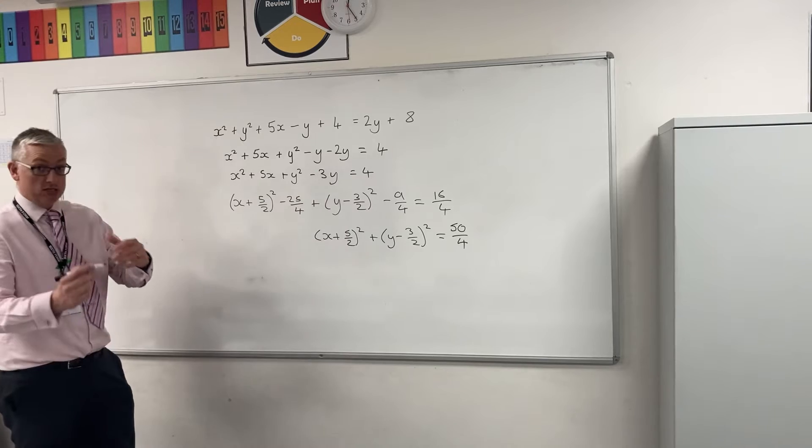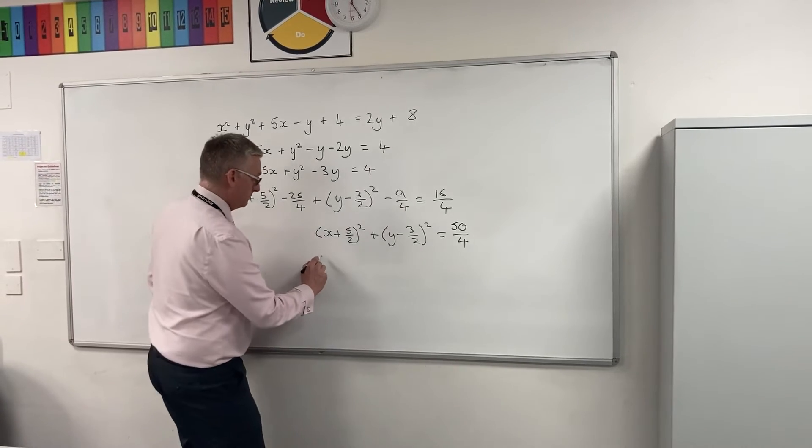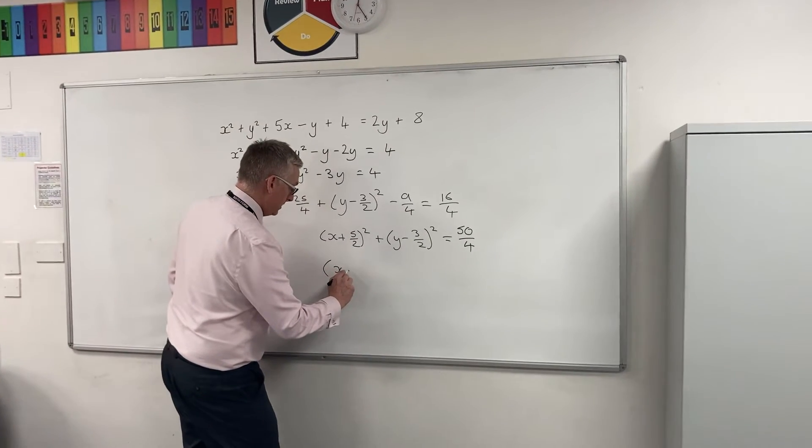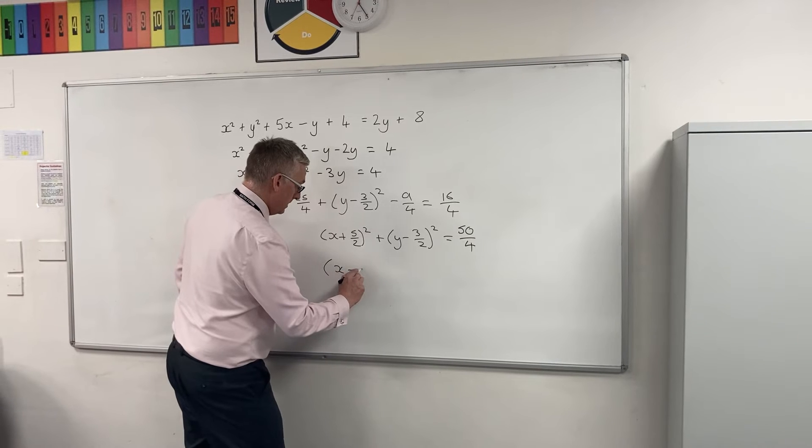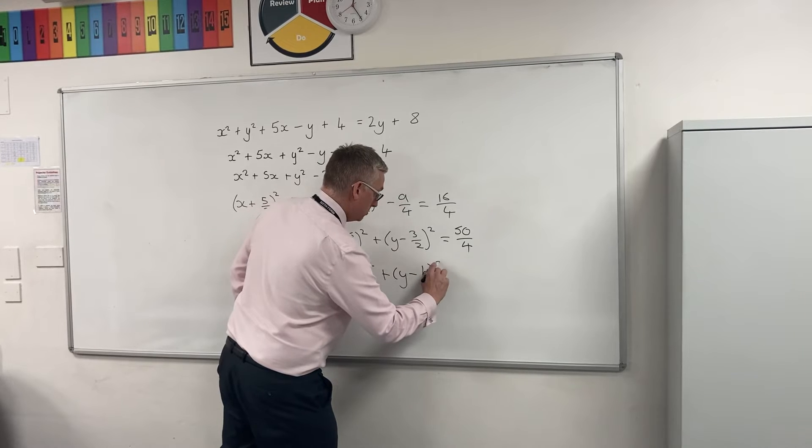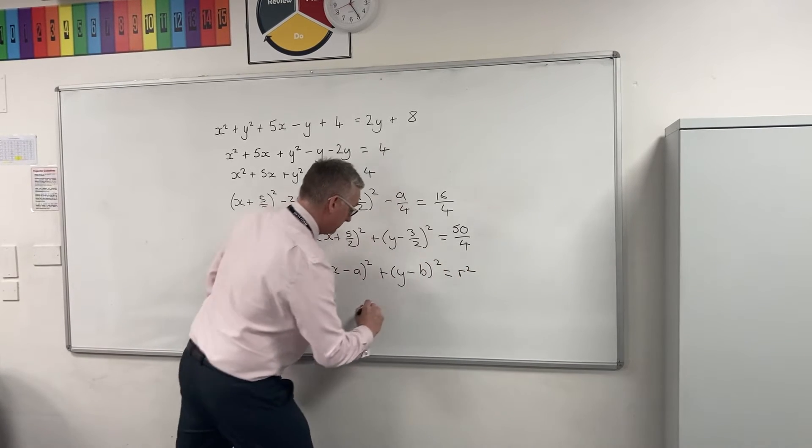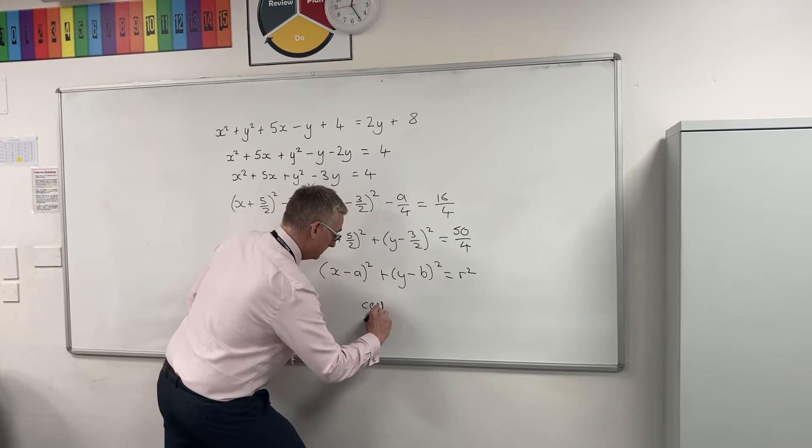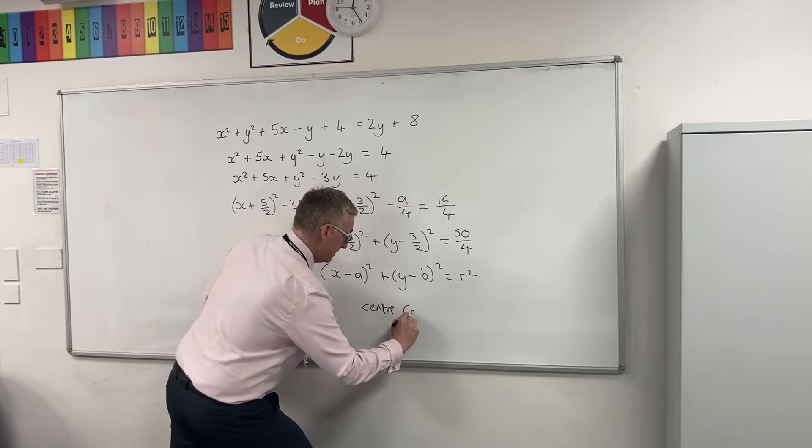Let's compare that to the standard equation of a circle, which is x minus a squared plus y minus b squared equals r squared.